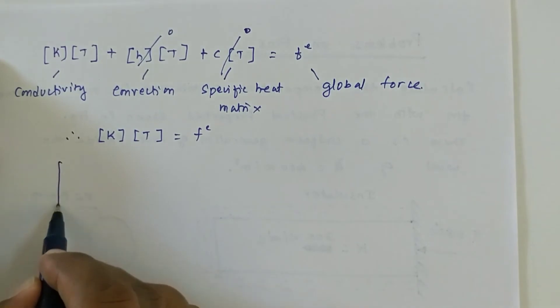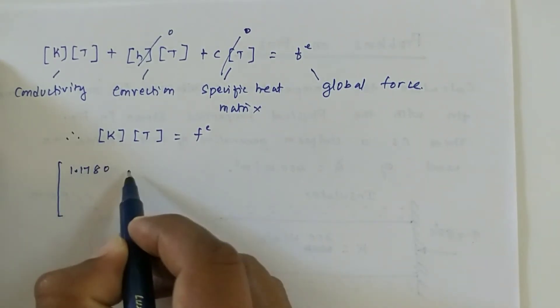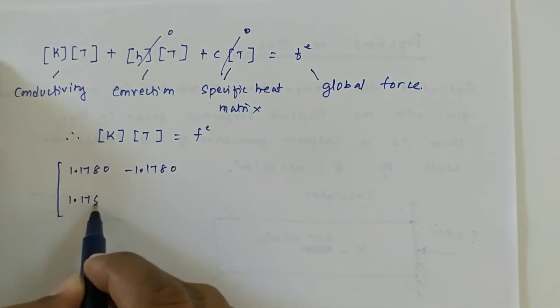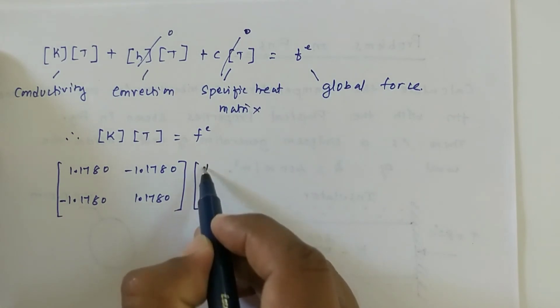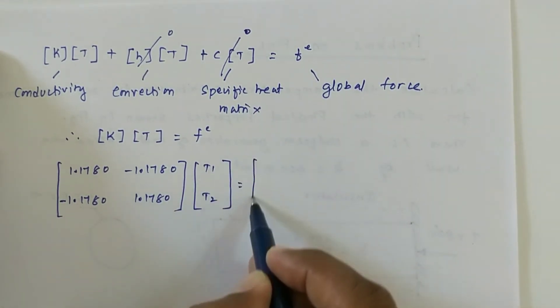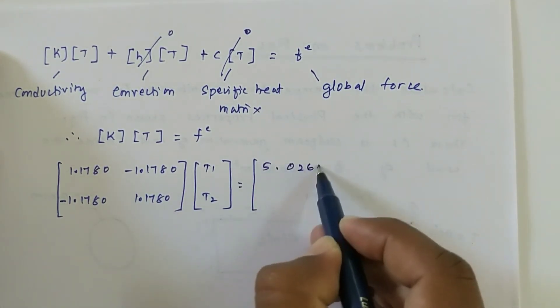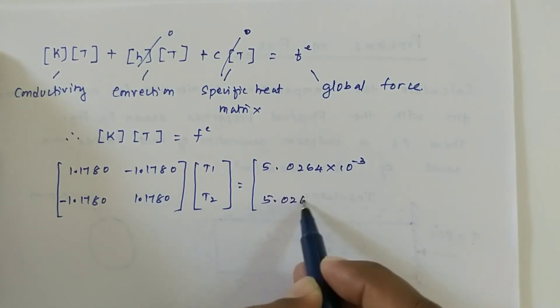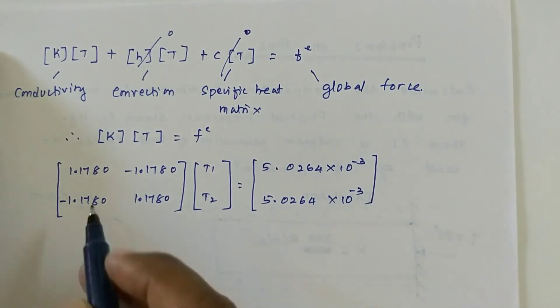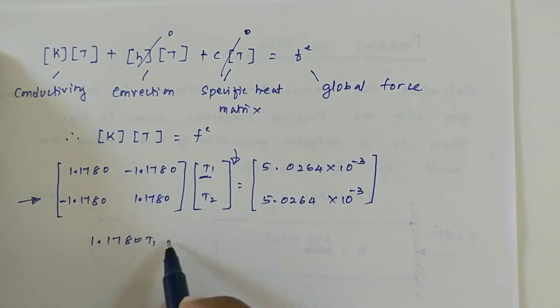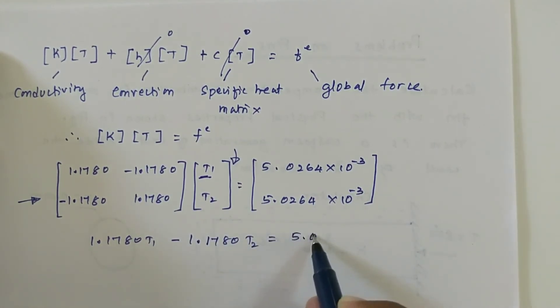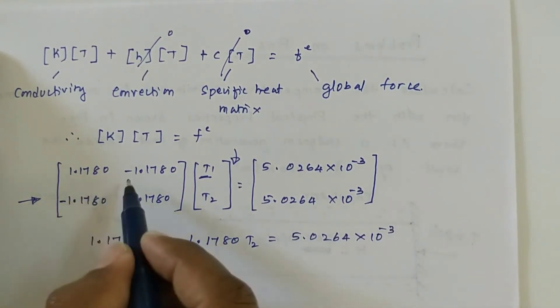K matrix we have already solved, which is [1.1780 -1.1780; -1.1780 1.1780]. Temperatures are [T1; T2] and the force vector is [5.0264 times 10 power minus 3; 5.0264 times 10 power minus 3]. You can consider any one equation for solving this.